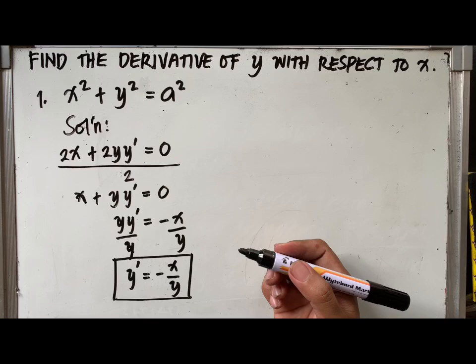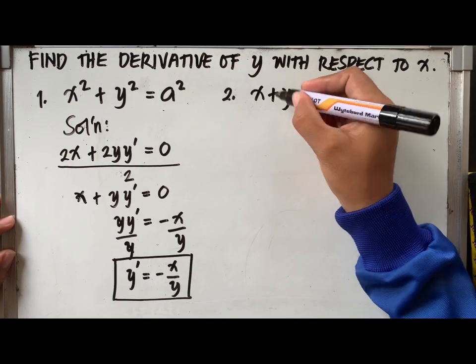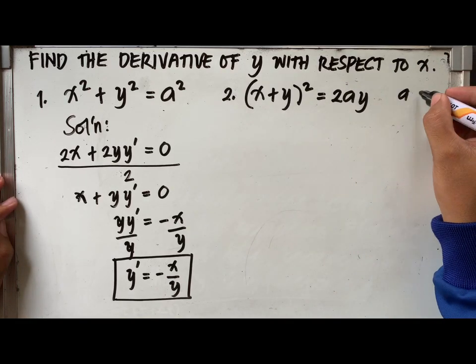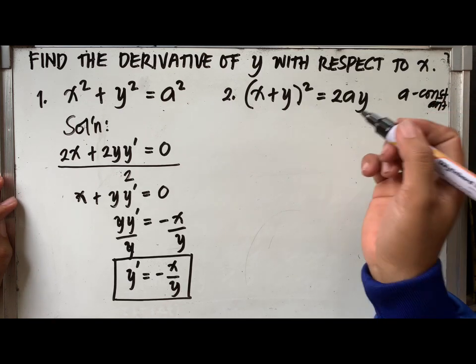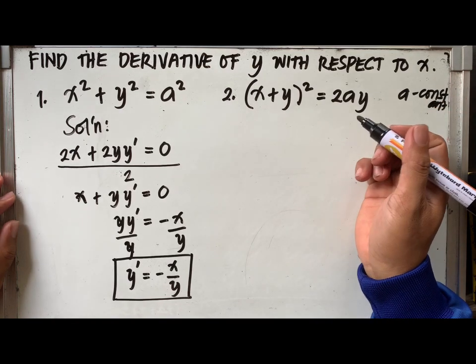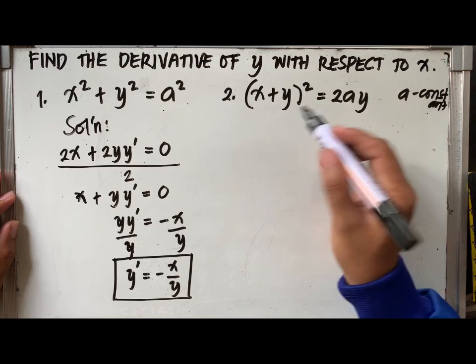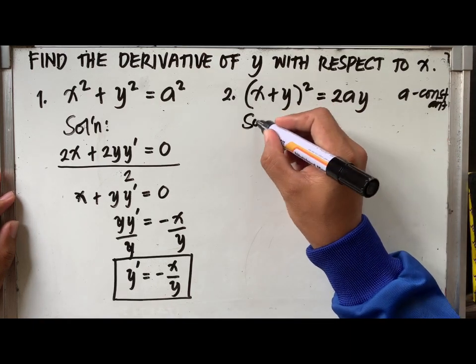Now, let's move on to our next problem, which is x plus y raised to the power of 2 equal to 2ay. So, please take note again that a here is a constant. So let's move on to differentiating this equation, starting with the left side of the equation.